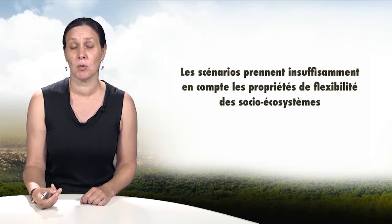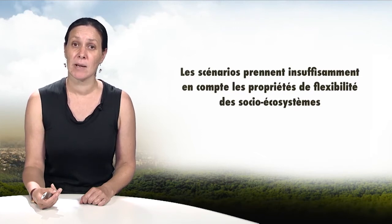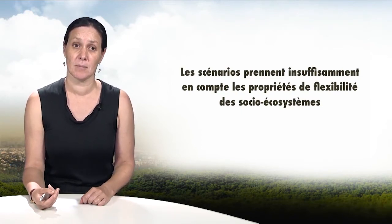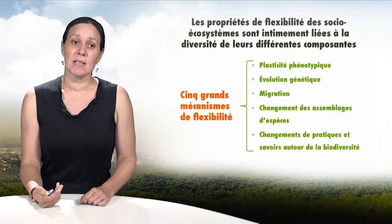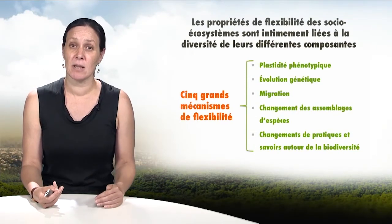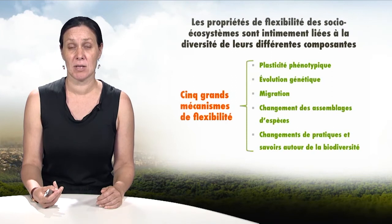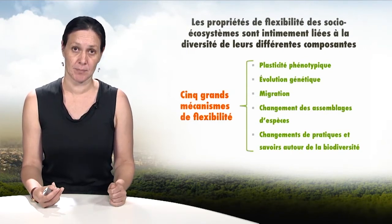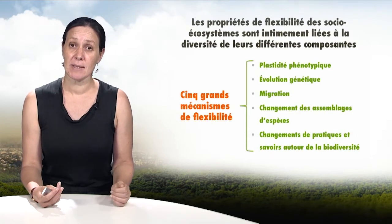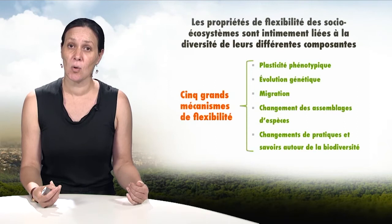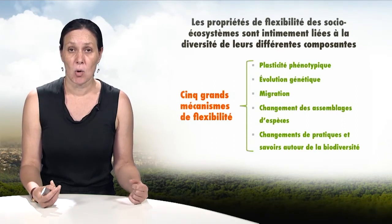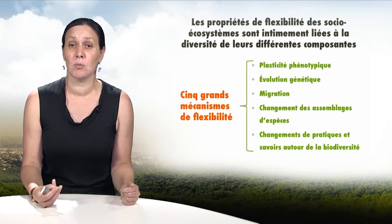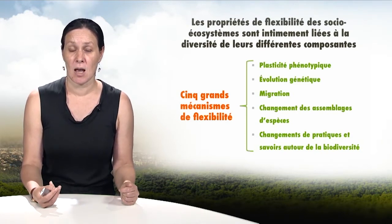In the scenarios already shown, projections for the displacement of species hypothesise that the relationship between the presence of a species and climate conditions will not change within the model forecasts. The properties of flexibility of socio-ecosystems are intricately linked to the diversity of their components — diversity of practices and uses around biodiversity, diversity of biological resources. Individually, phenotypic plasticity makes it possible to have variation of the traits of individuals based on their environment. In terms of a population, genetic evolution modifies the distribution of traits across a population.